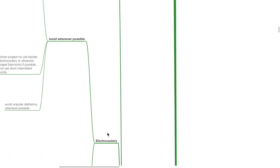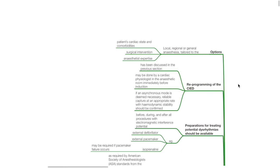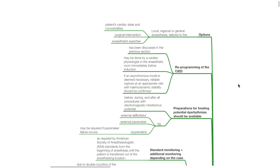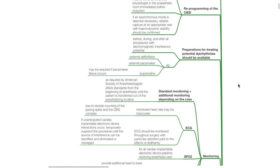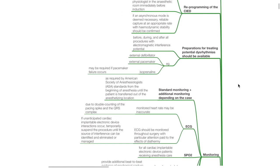Intraoperative management — options: local, regional, or general anesthesia tailored to the patient's cardiac state and comorbidities, surgical intervention, and anesthetist expertise. Reprogramming of the CIED may be done by a cardiac physiologist in the anesthetic room immediately before induction. If an asynchronous mode is deemed necessary, reliable capture at an appropriate rate with hemodynamic stability should be confirmed. Preparations for treating potential dysrhythmias — including external defibrillator, external pacemaker, and isoprenaline — should be available before, during, and after all procedures with electromagnetic interference potential.